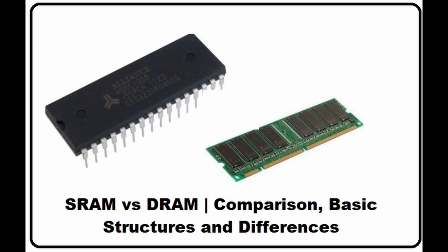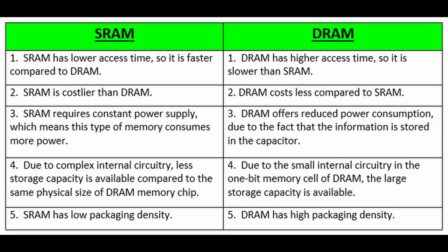Since the invention of DRAM and SRAM, various types of RAM have been developed, including SDRAM, DDRAM, and others. These newer types of RAM offer higher speeds and larger capacities, allowing computers to store data more quickly and efficiently. Today, RAM is an essential component of modern computing, and advancements in RAM technology continue to drive the development of faster, more powerful computers.